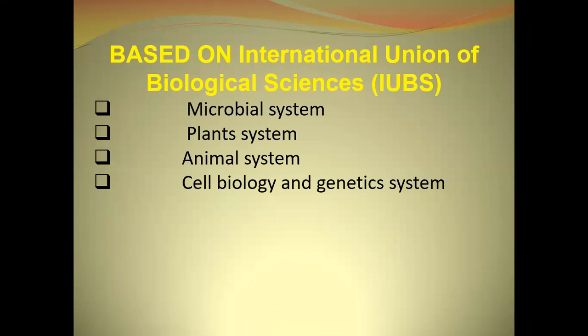Based on IUBS, there are four types of indicators. If the question comes, please write the definition, what are the criteria, what are the characteristics, and some examples of bioindicator organisms in each group — in the microbial system, plant system, and animal system.